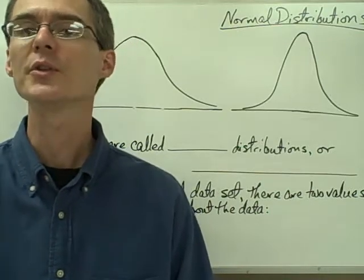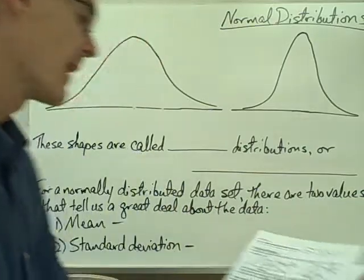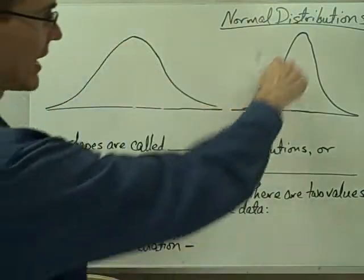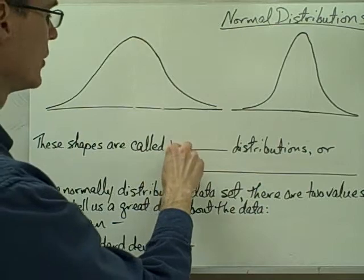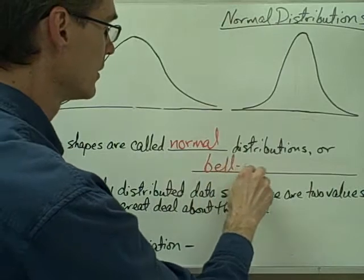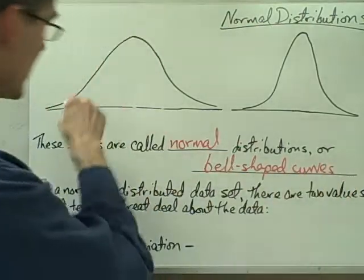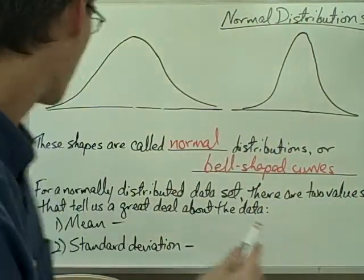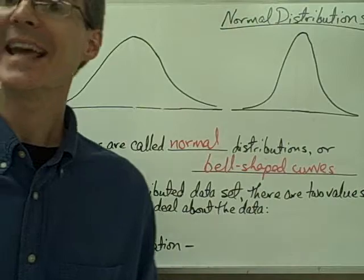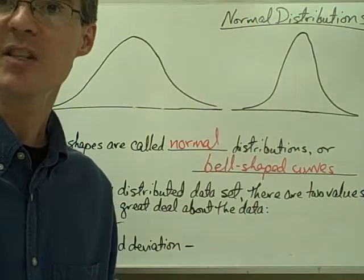This video is on the normal distribution. When you draw a dot plot for some data sets, you get a distribution that has a particular shape. This shape looks kind of like these two curves here. These shapes are called normal distributions, or sometimes a bell-shaped curve, because they have a shape that looks like a bell. Anytime you have a normally distributed data set, if you plot all the data points in a dot plot, the dots would take on this bell shape.